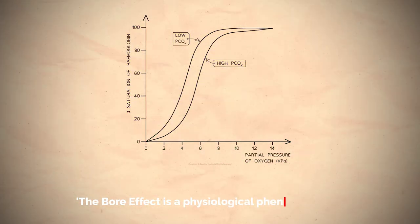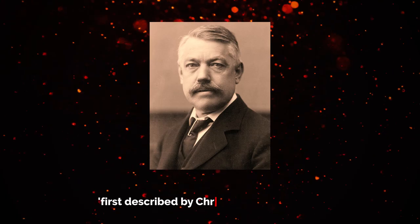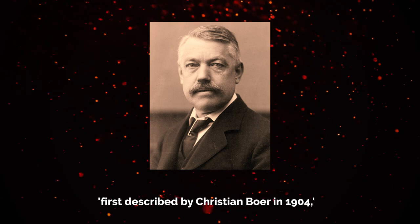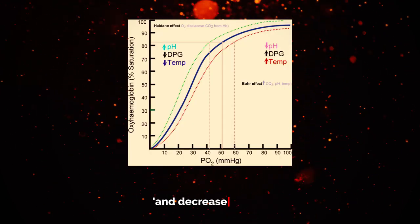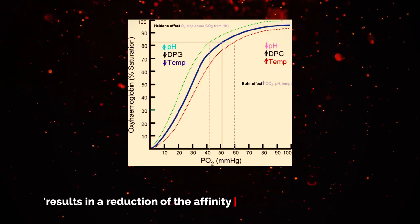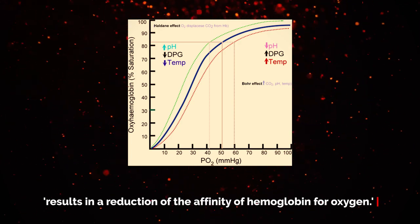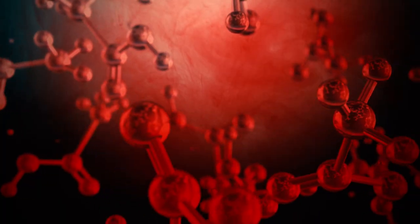The Bohr effect is a physiological phenomenon first described by Christian Bohr in 1904, where an increase in the carbon dioxide concentration and decrease in pH results in a reduction of the affinity of hemoglobin for oxygen. This leads to a higher release of oxygen in tissues. Conversely, when the levels of carbon dioxide decrease and pH increases, hemoglobin binds to oxygen more tightly.